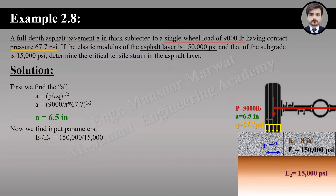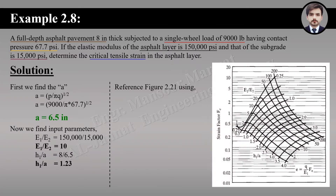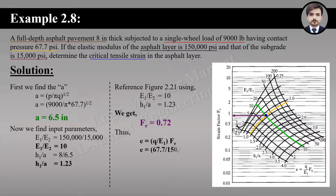Now we find the input parameters. The first input parameter is the modulus ratio, which equals 10. The second input parameter is the thickness-to-radius ratio, which equals 1.23. Using reference figure 2.21 with these input parameters, we get a strain factor equal to 0.72. Putting the values into the critical tensile equation, the required critical tensile strain equals 3.25 × 10⁻⁴.